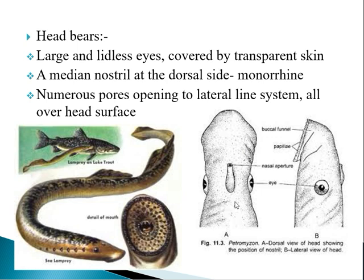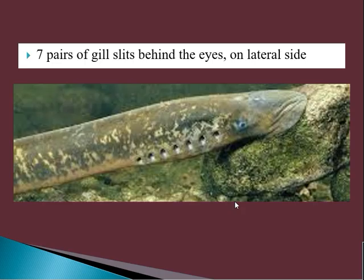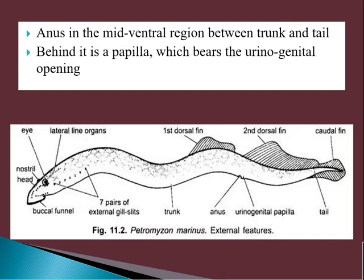There are seven pairs of external gill slits behind the eyes — seven on each side. The number of gill slits in Petromyzon is fixed at seven pairs.